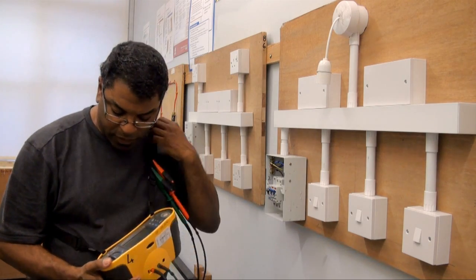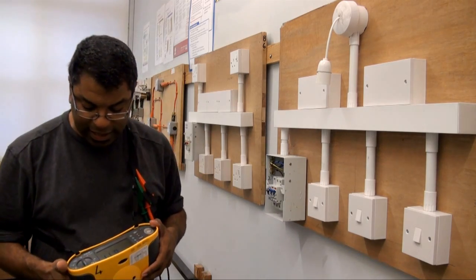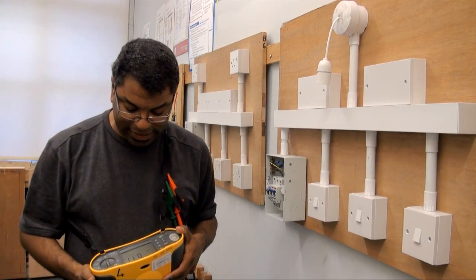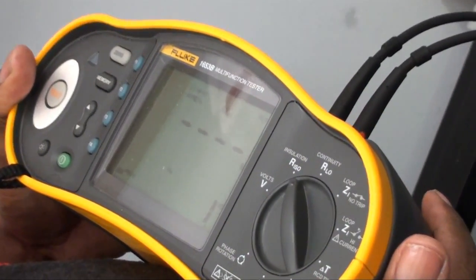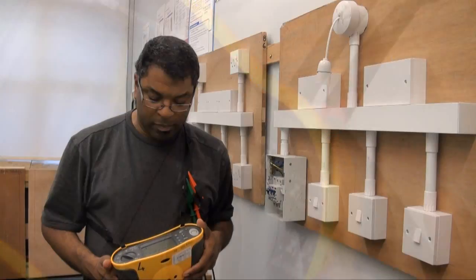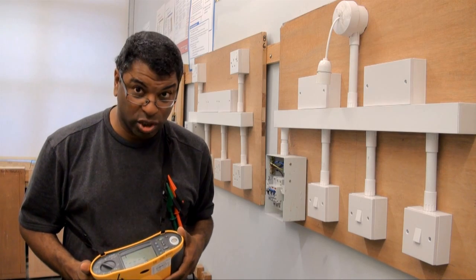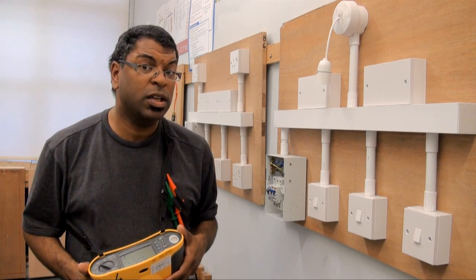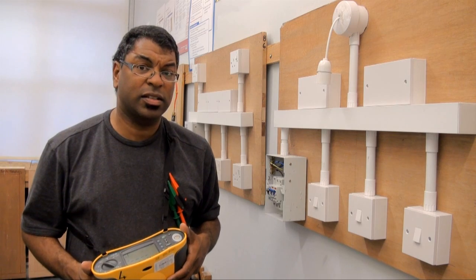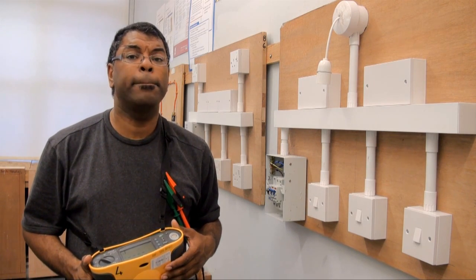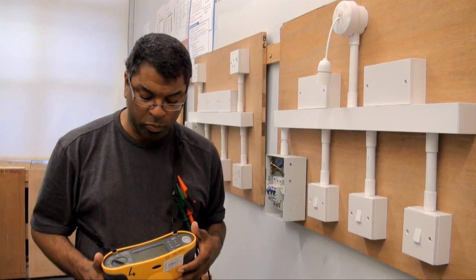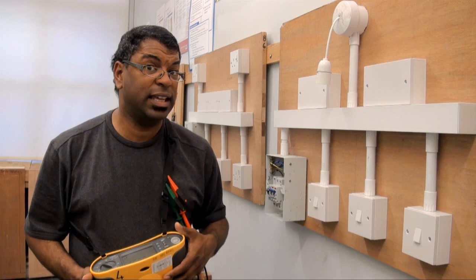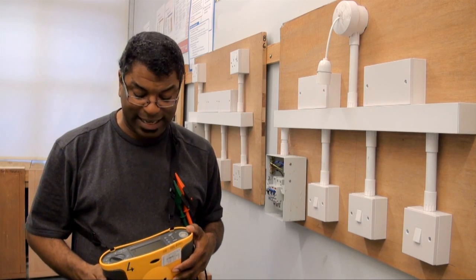Now first thing we need to do with our meter is we need to put it on the correct setting. The setting for insulation resistance on this Fluke meter is right here where it says insulation. Now unlike when we're doing continuity, we still are measuring in ohms, but insulation resistance testing measures in what we call mega ohms, that's millions of ohms, whereas continuity we're just measuring in ohms.